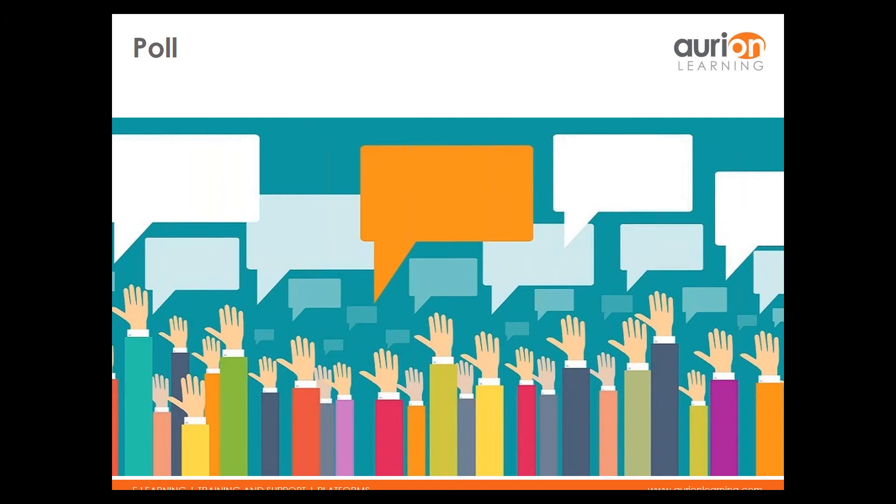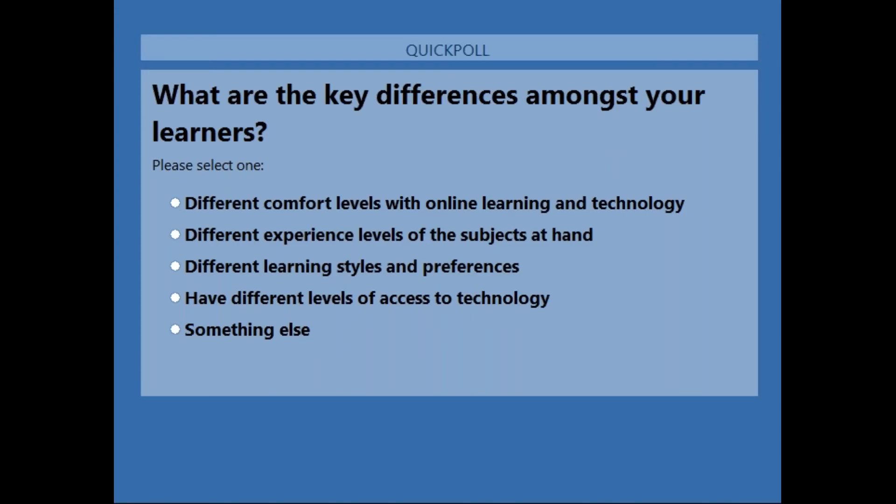A second poll question to shape our discussion: where are the key differences amongst your learners? Choose all that apply. Options include: different comfort levels with online learning and technology; different experience levels of the subject at hand; different learning styles and preferences; different levels of access to technology; or something else. If you choose something else, please share it via the chat so we can discuss it as we go along.